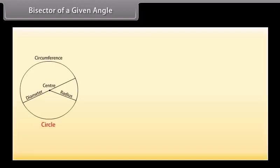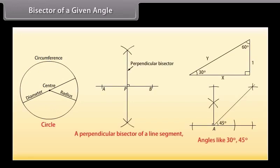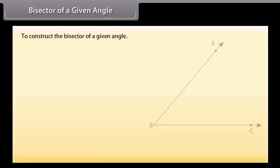Bisector of a given angle. Friends, we know how to construct a circle, a perpendicular bisector of a line segment, and angles like 30 degrees, 45 degrees. Now, we will learn to construct the bisector of a given angle.